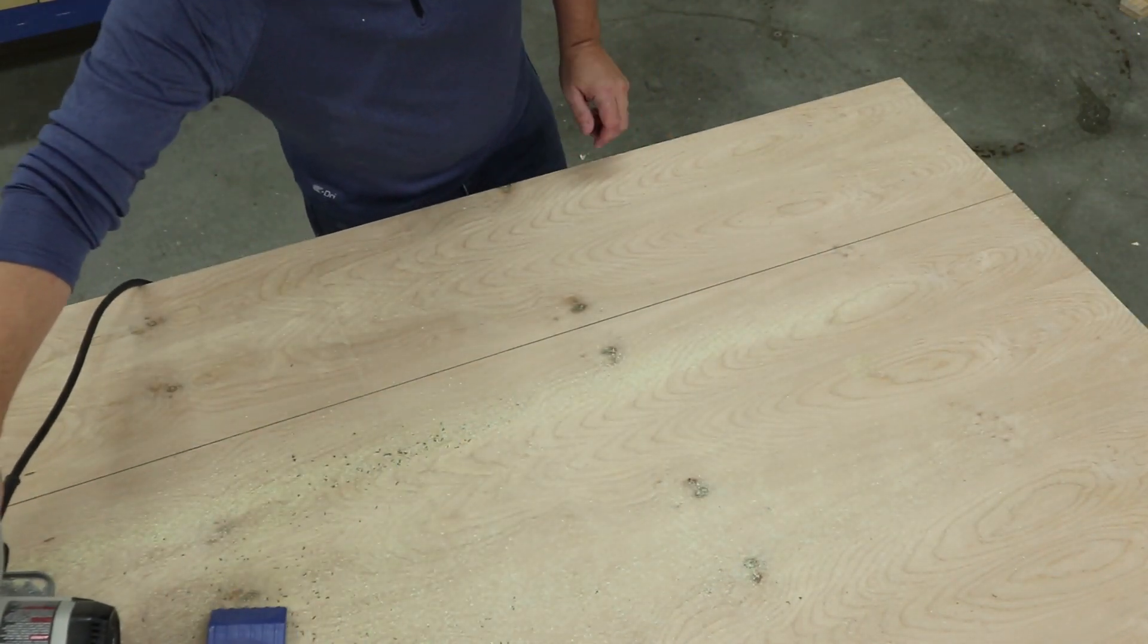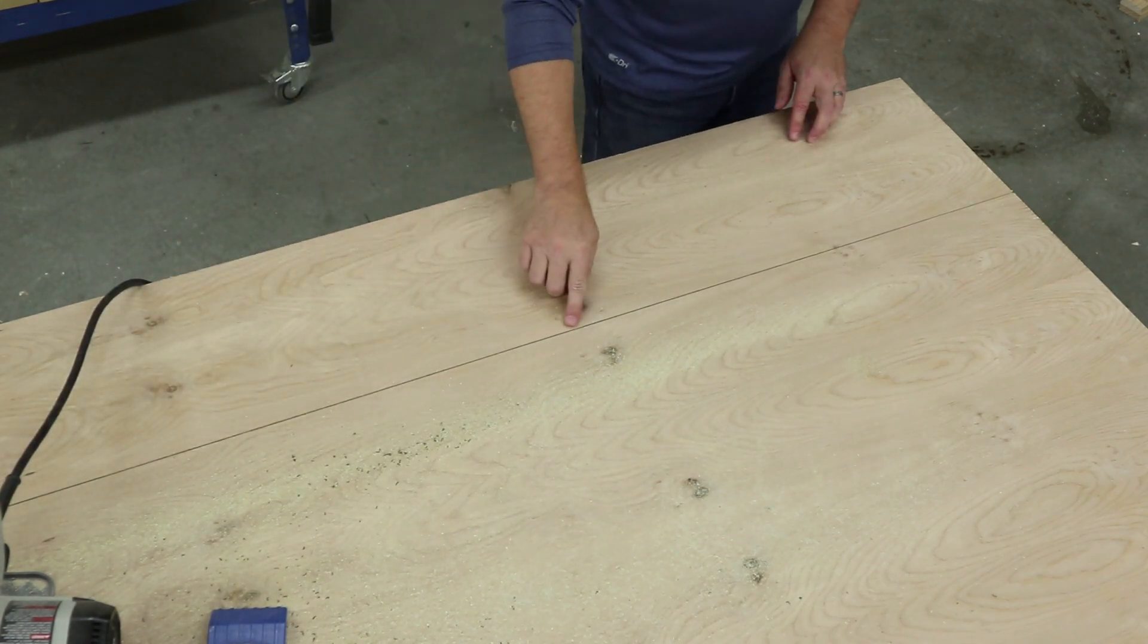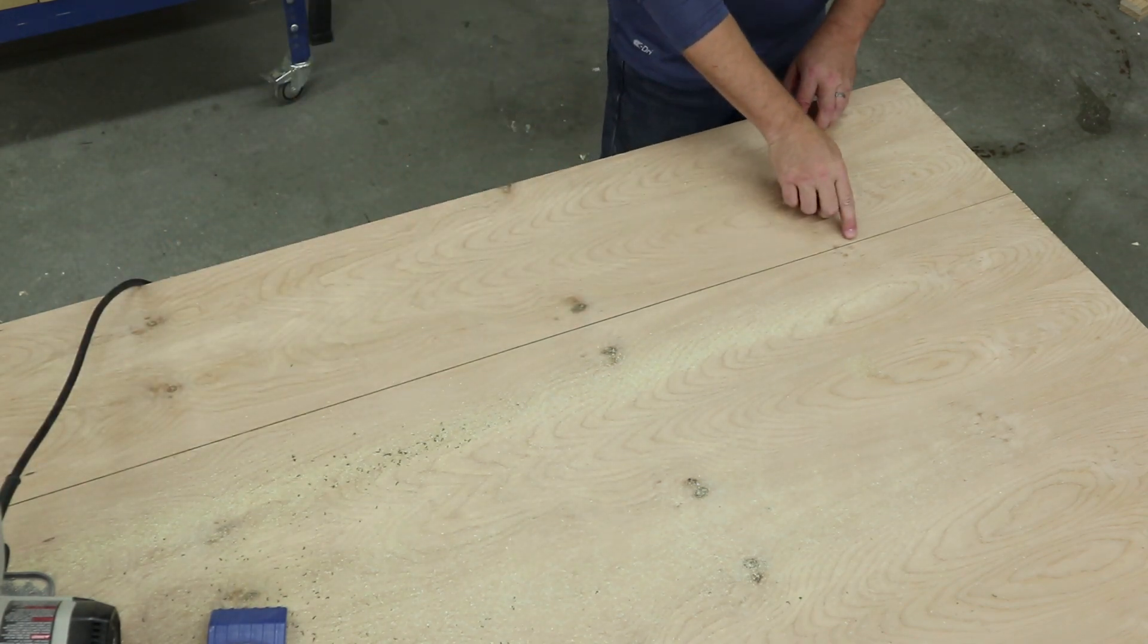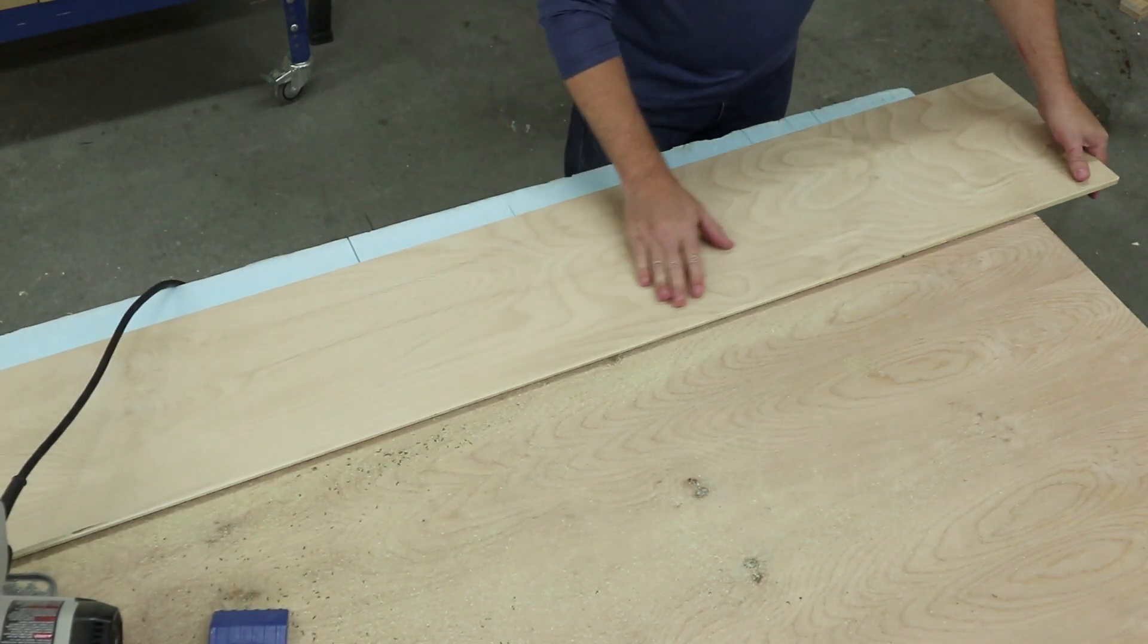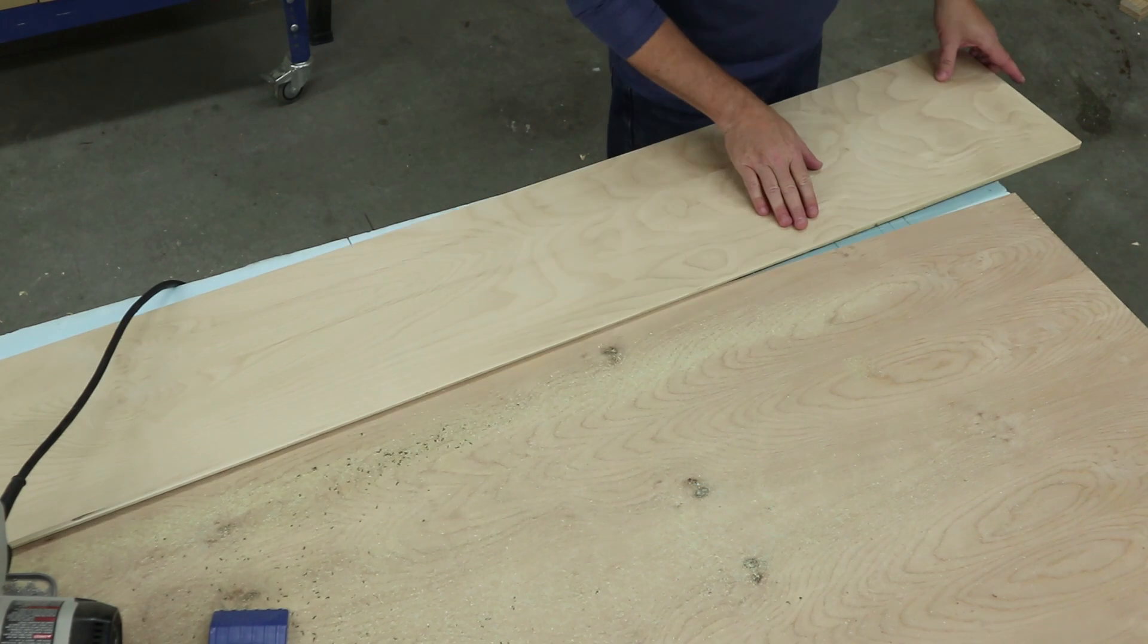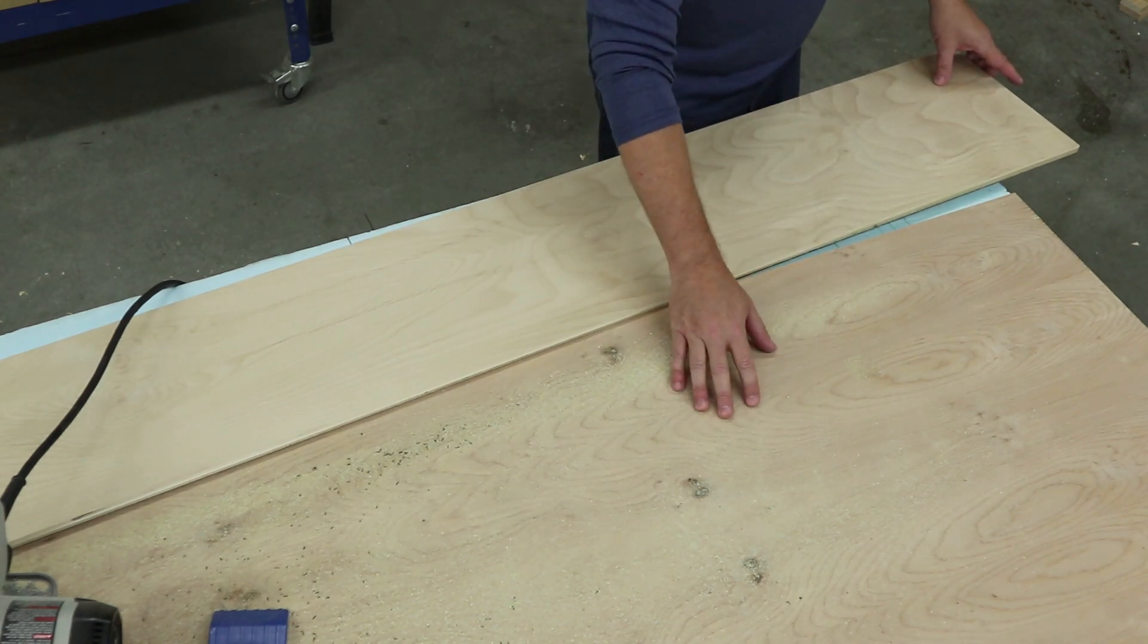As you can see with the Ripcut, you get a nice straight cut and great results easily. Also, a good tip is to cut with the back face of the plywood up and the good face down. That way if you get any splintering along the edge at all, it will be in the back face rather than on the front.